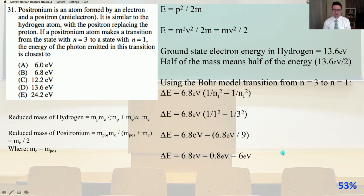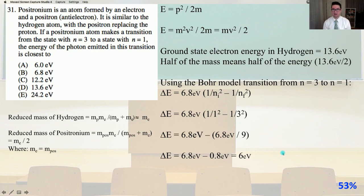Let's first look at the reduced mass of hydrogen, which equals the mass of the proton times the mass of the electron divided by the quantity mass of the proton plus mass of the electron, and that's roughly going to equal the mass of the electron. The reduced mass of positronium, however, is going to equal the mass of the positron times the mass of the electron divided by the quantity mass of the positron plus the mass of the electron, and that's going to equal the mass of the electron divided by 2, because the mass of the electron equals the mass of the positron.